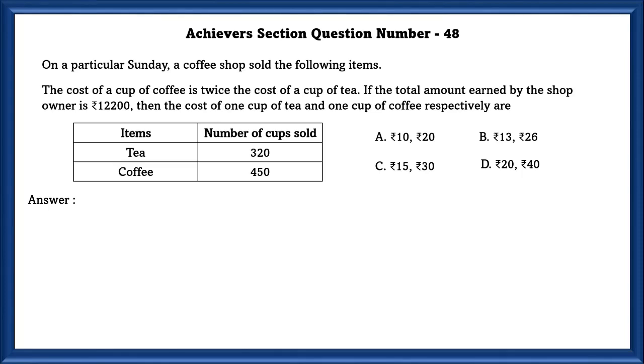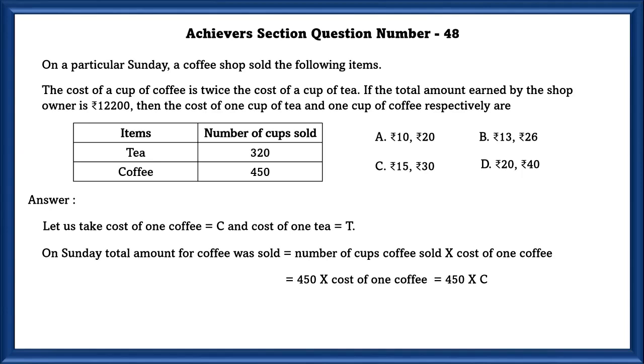Here they have not given the price of 1 tea and 1 coffee, but they have given the number of cups sold. Let us take cost of 1 coffee as C and cost of 1 T as T.